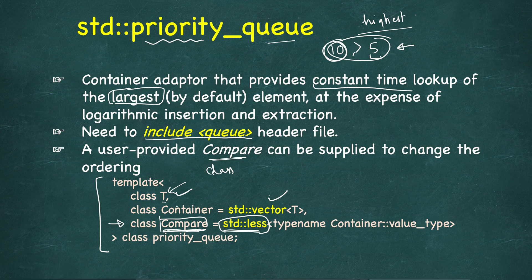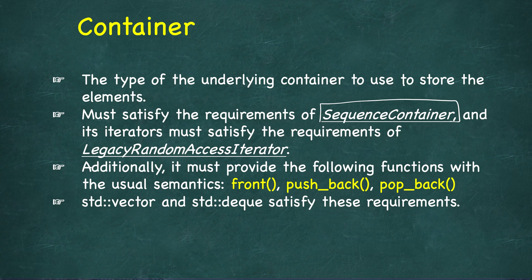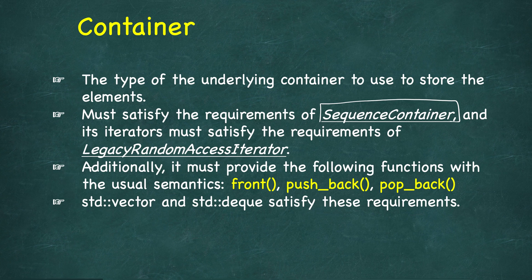The underlying container defaults to vector. Whatever container you use, it must meet the requirements of a sequence container — one that stores objects of the same type in a linear arrangement. The iterators must satisfy the requirements of a legacy random access iterator, which is a legacy bidirectional iterator that can be moved to point to any element in constant time. For example, a pointer to an element of an array satisfies the requirement of a legacy random access iterator.